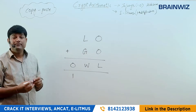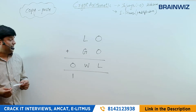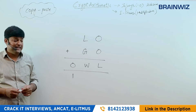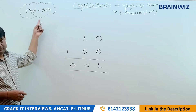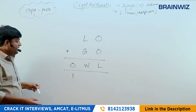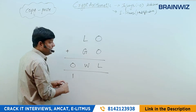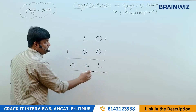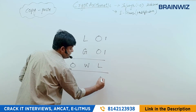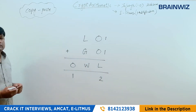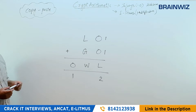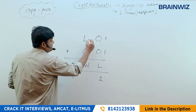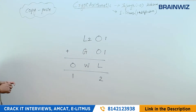O can't be 2 because when you add two single digits there is no way you're getting 2 as a carry. So O is 1. With that, you get L as 2. Copy-paste: L value is 2.